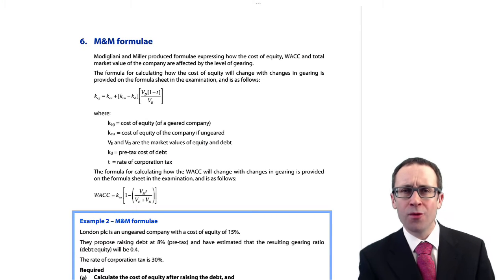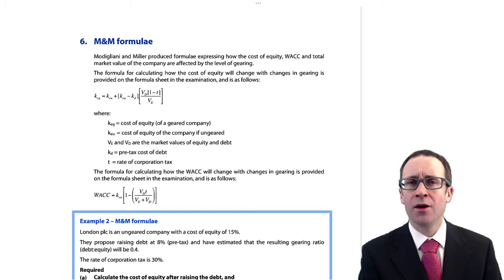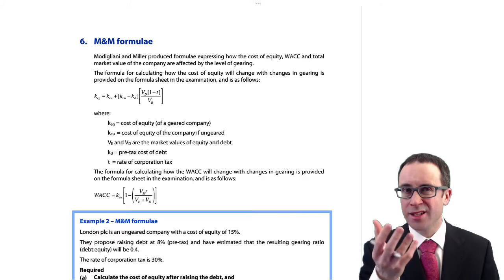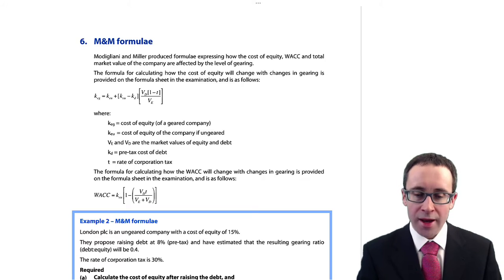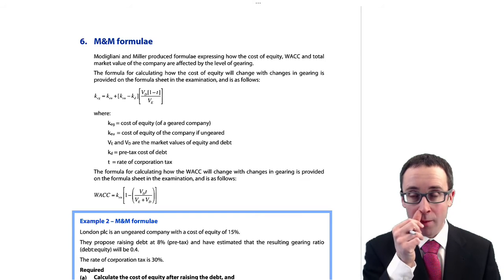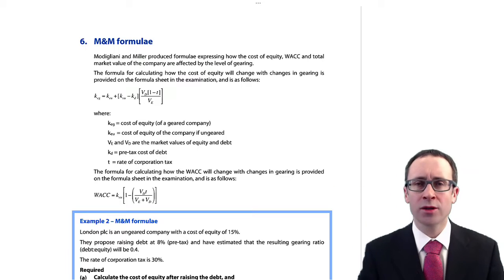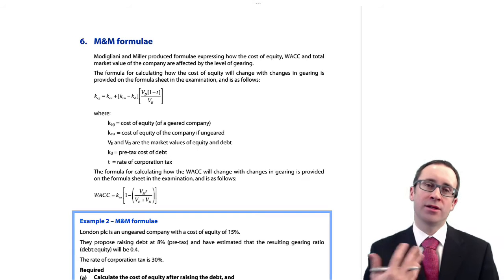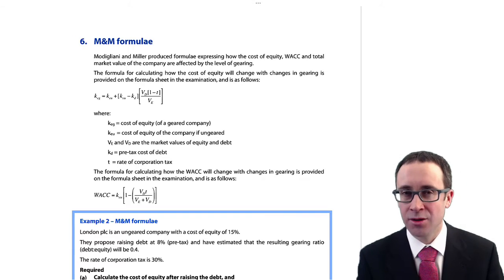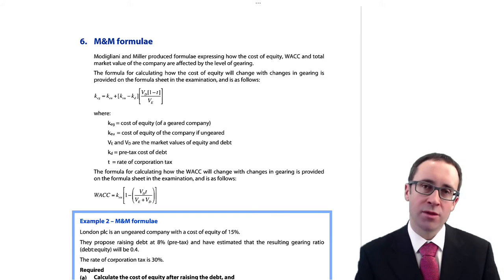We've gone through and played around with some weird and wonderful theories from Modigliani and Miller with their no-tax and their tax theories. Hopefully you've had a little bit of time to practice some questions. If not, do make sure that you do. Because what we've got now is we've got the M&M formulae to consider as well. You can see that there's two here. Don't worry, don't stress. You don't need to go through that and learn them. Although if you practice enough questions, they'll become second nature to you and you will learn them automatically.